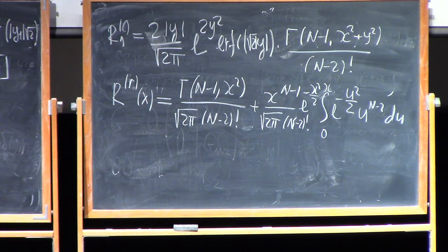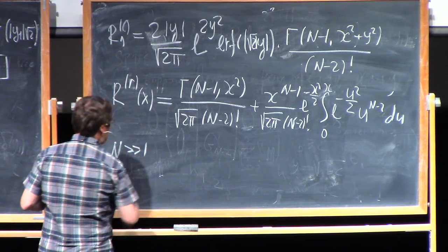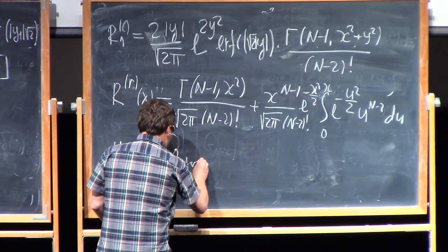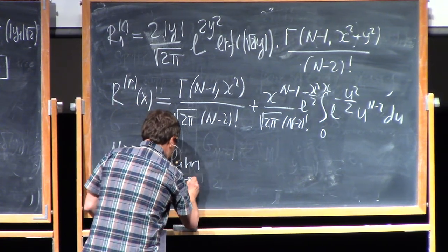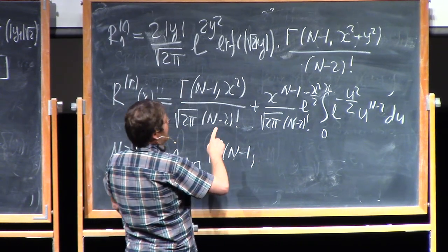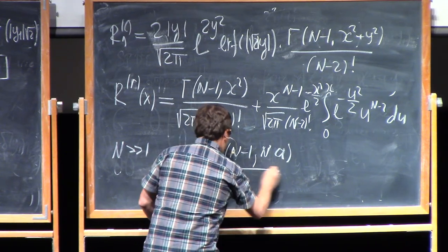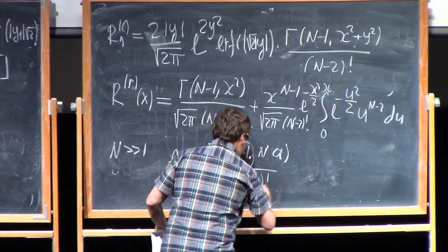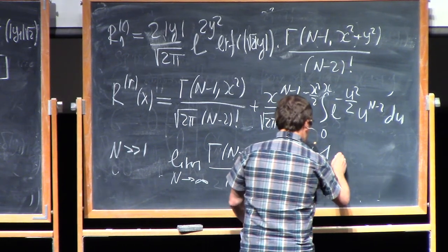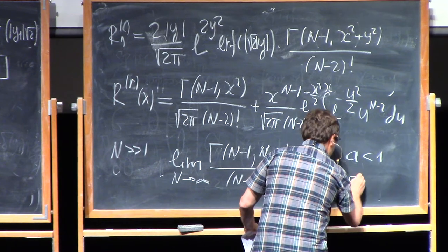Now we have everything for finite size matrix that we need. Let us analyze the most interesting limit when n is big, much larger than one. So, here, the first fact that we will use is well-known property of this incomplete gamma function, namely, that limiting value of the incomplete gamma function, when its argument scaled with n, so I will write it, incomplete gamma n of n times a divided by n minus two factorial, it has a well-defined limit in this case, n tending to infinity, and limit is one if a is smaller than one, and zero if a is larger than one.